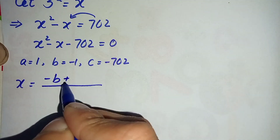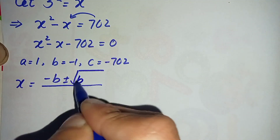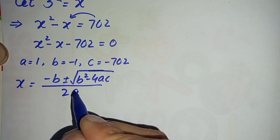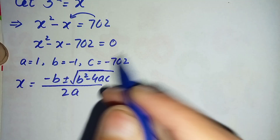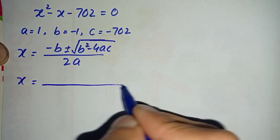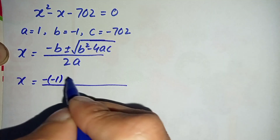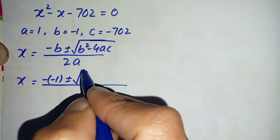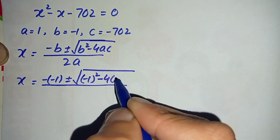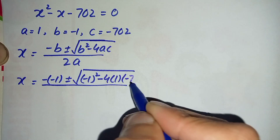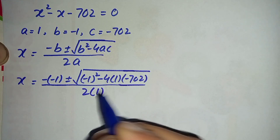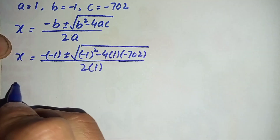The quadratic formula for the variable x is: x equals minus b plus or minus square root of b squared minus 4ac, divided by 2a. Substituting the values: x equals minus b — the value of b is minus 1 — plus or minus square root of b squared, which is minus 1 squared, minus 4ac where a is 1 and c is negative 702, divided by 2 times 1.